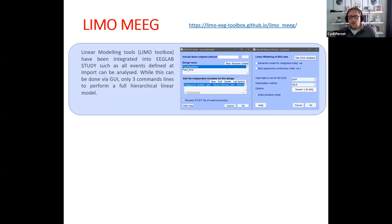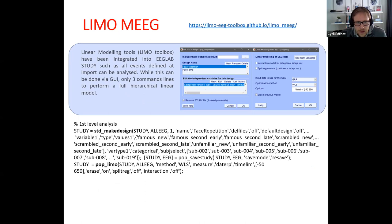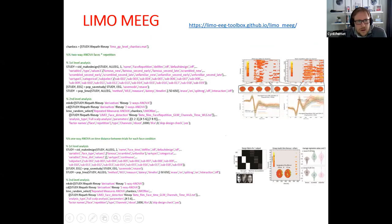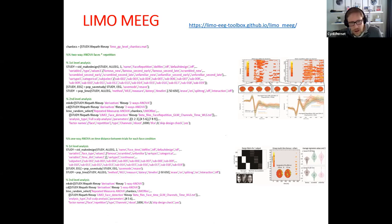Now the last step: your data have been imported using BIDS, they've been preprocessed, and now you can do the statistical analysis using the LIMO tools. You make the design, then run the first-level analysis using pop_limo, and then random effects. For example: a first-level analysis with a standard three-by-three design where you can find phase effect, repetition effect, or something more complex like the time between repetition levels. It's a fully flexible toolbox for hierarchical linear models, and just three command lines are enough to redo all of the analysis.